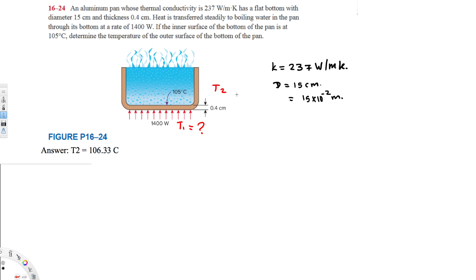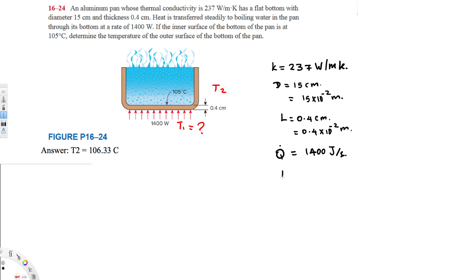We have thickness L = 0.4 centimeters, which is 0.4 × 10⁻² meters. Heat is transferred steadily through the bottom at a rate of 1400 watts, so the heat transfer rate Q̇ = 1400 watts, or equivalently 1400 joules per second. Both are the same thing.